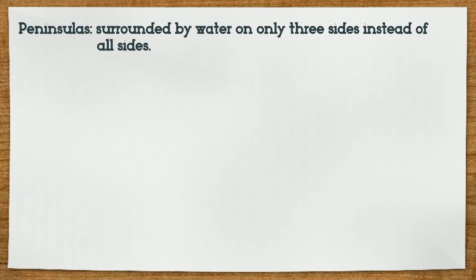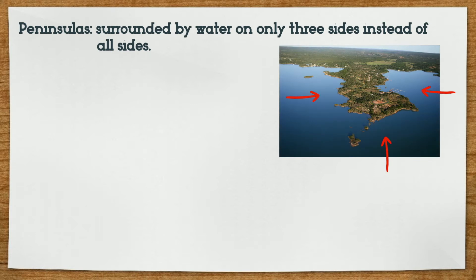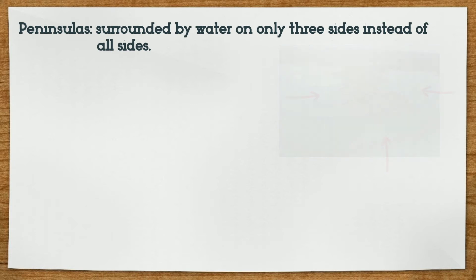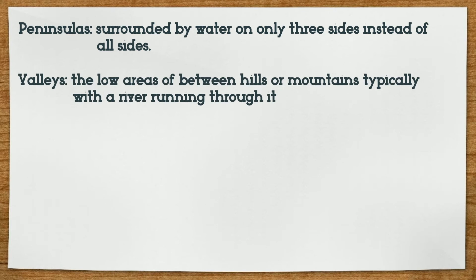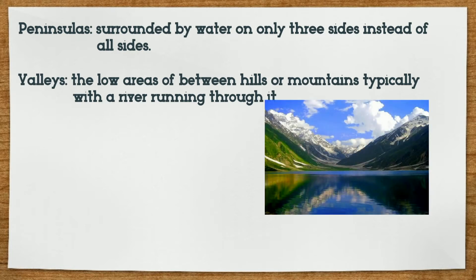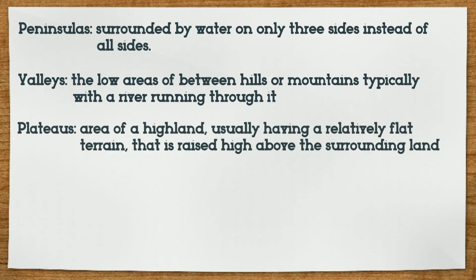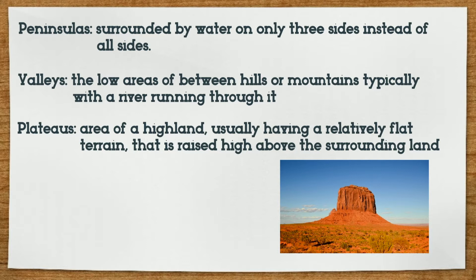Peninsulas are similar to islands, but different because they are surrounded by water on only three sides instead of all sides. Valleys are interesting because they're not as high as mountains or islands, but are the low areas between hills or mountains, typically with a river running through it. This right here is the beautiful Gagan Valley in Pakistan. Plateaus are an area of highland,